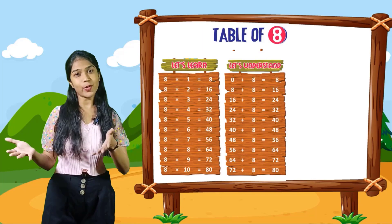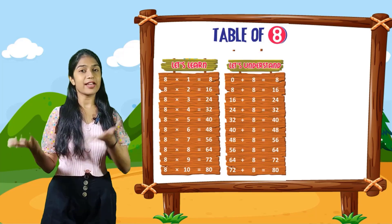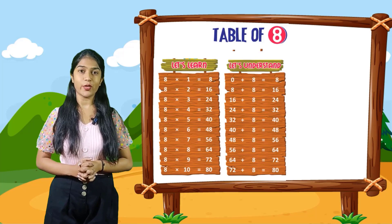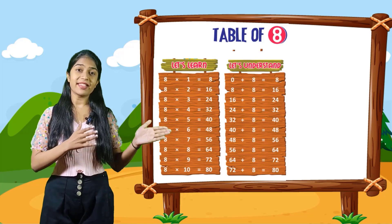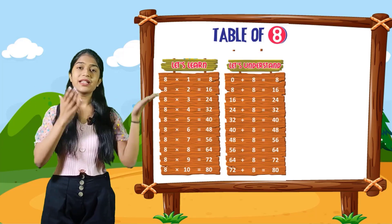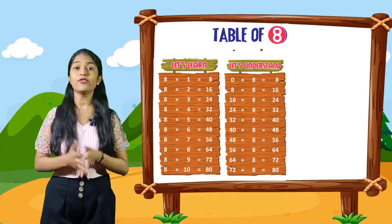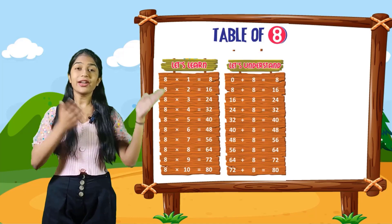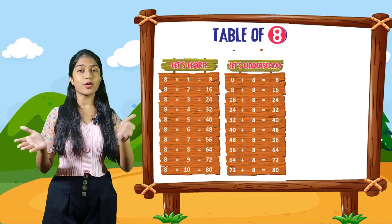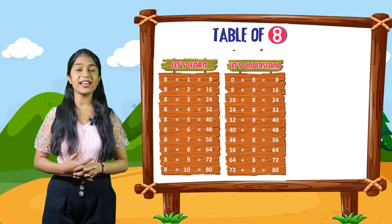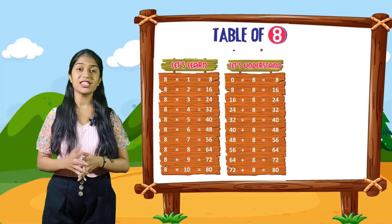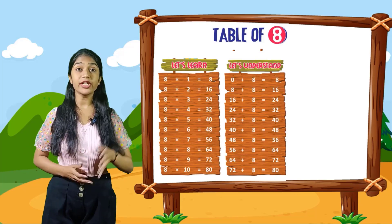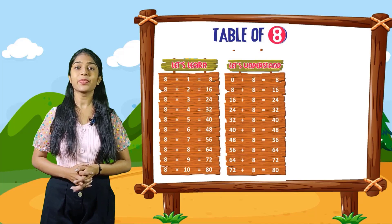Now let's understand. 0 plus 8 is equal to 8. 8 plus 8 is equal to 16. 16 plus 8 is equal to 24. 24 plus 8 is equal to 32. 32 plus 8 is equal to 40. 40 plus 8 is equal to 48. 48 plus 8 is equal to 56. 56 plus 8 is equal to 64. 64 plus 8 is equal to 72. 72 plus 8 is equal to 80.